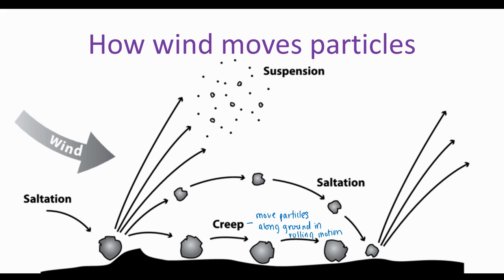The next type is saltation. Saltation is the bouncing motion of larger particles. Most sand is going to be transported this way because sand is a large particle. When we're thinking about soil particles, sand is the largest. So with saltation, it is going to bounce along the ground.